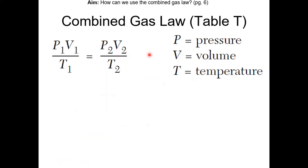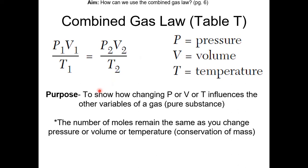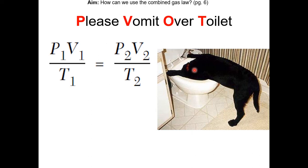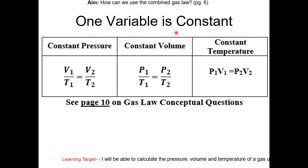If we combine all the gas laws, we get the combined gas law equation: P1 times V1 over T1 equals P2 times V2 over T2. This equation can be found on Table T on your reference table, so there's no need to memorize it. The purpose of the combined gas law is to show how changing pressure, volume, or temperature influences the other variables of a gas, assuming a pure substance. The number of moles remains the same — law of conservation of mass. Here's a catchphrase: 'please vomit over toilet.' If one variable is constant, we set it to 1 to simplify the equation.